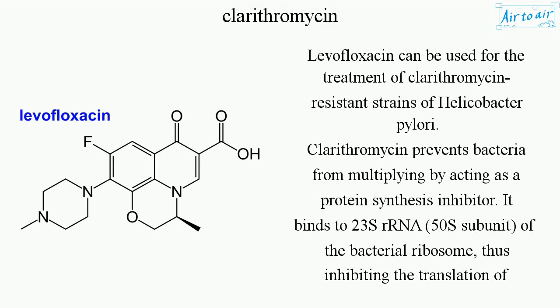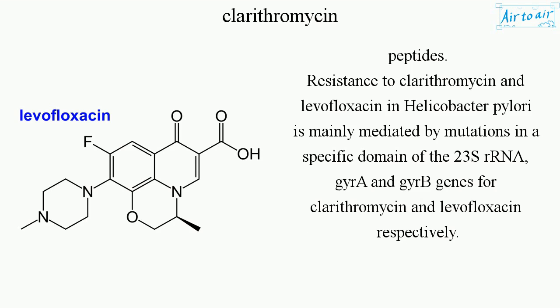Levofloxacin can be used for the treatment of clarithromycin-resistant strains of Helicobacter pylori. Clarithromycin prevents bacteria from multiplying by acting as a protein synthesis inhibitor. It binds to the 23S rRNA 50S subunit of the bacterial ribosome, thus inhibiting the translation of peptides.